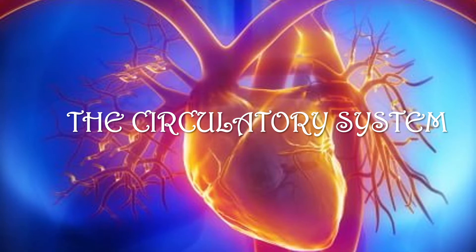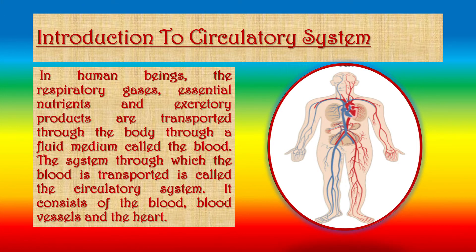The Circulatory System. In human beings, the respiratory gases, essential nutrients and excretory products are transported through the body through a fluid medium called the blood. The system through which the blood is transported is called the circulatory system.